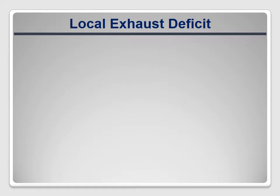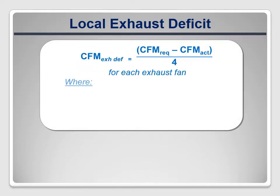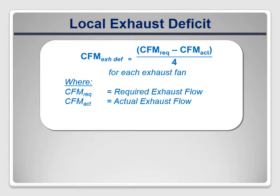The local exhaust deficit calculation compares the actual exhaust flow rate to the rates required for new construction in ASHRAE 62.2. The deficit is one-fourth of the difference between the two — presumably because we don't expect local exhaust fans to run all the time; they're typically intermittently operated. In addition, a credit of 20 CFM per room is allowed if one or more operable windows are present in that room to provide additional ventilation as needed.